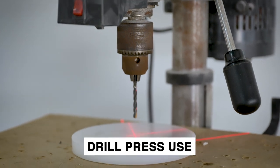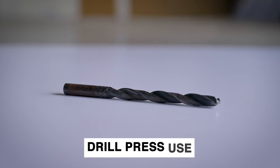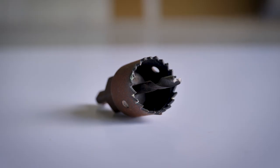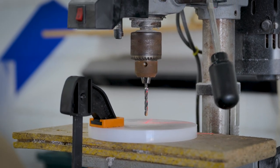Here's a compilation of different drilling techniques on the drill press. This will include using a twist drill bit, step drill bit, and a hole saw. Thicker pieces of plastic are used for this demonstration.